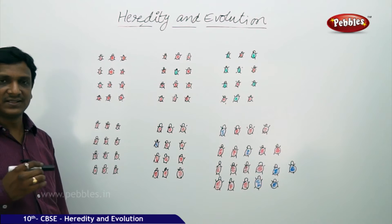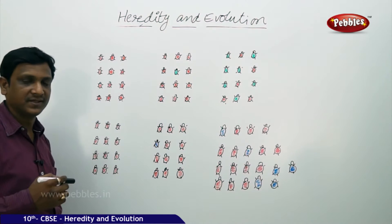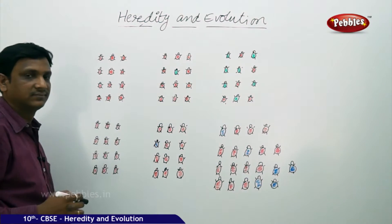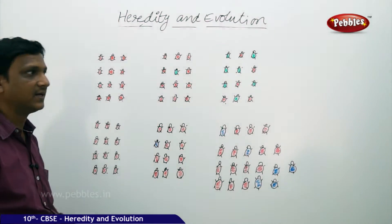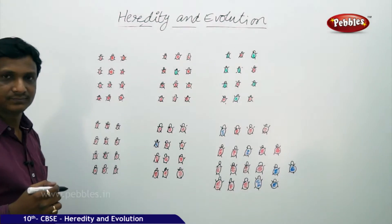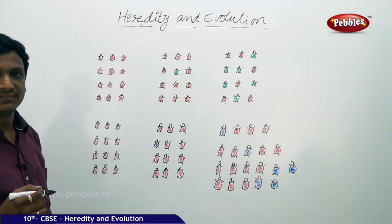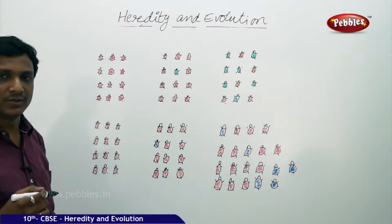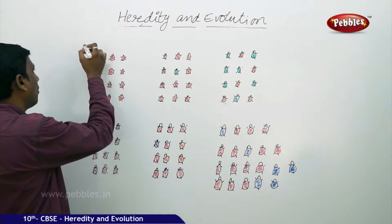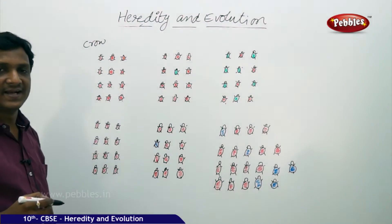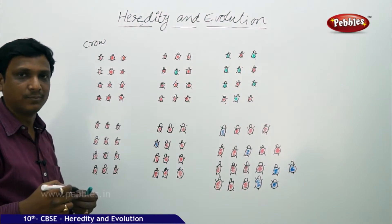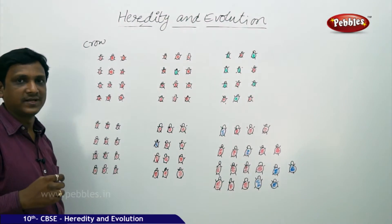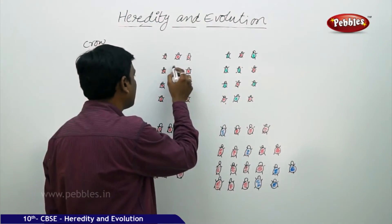The basic idea of evolution is explained with an illustration using beetles and their colors. In a forest, there are some red color beetles feeding on the leaves of bushes. Since the beetles are red and the bushes are green, they are quite contrasting. Crows can easily identify the red color beetles and eat them because the red color is opposite to the color of the leaves.